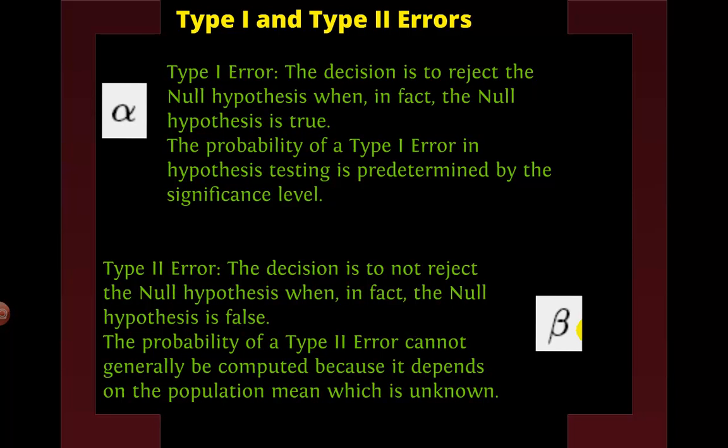The other error is type 2, which is when we don't reject, but the hypothesis is actually false. So we should have rejected it. We can't calculate this value, but it does exist. A lot of times they talk about these two things in the idea of a jury trial, where you convicted the person and they were innocent, or you failed to convict the person and they were guilty. Those are ideas about how type 1 and type 2 errors can be related to real world.